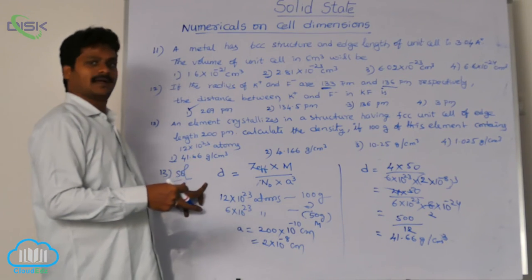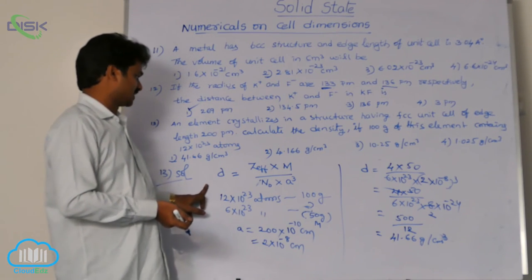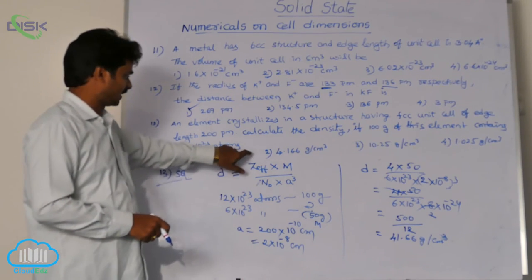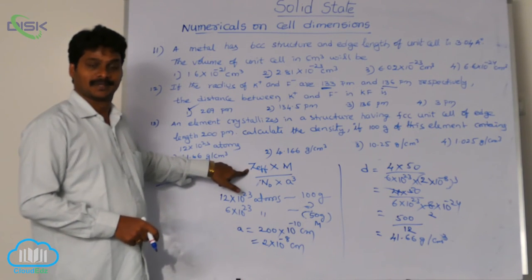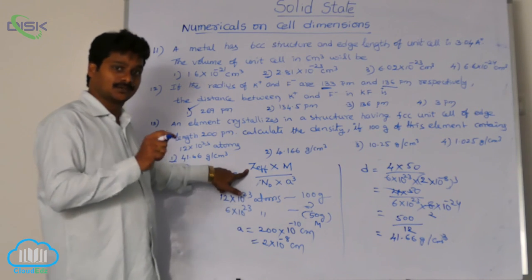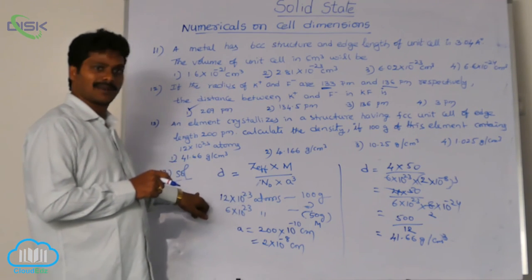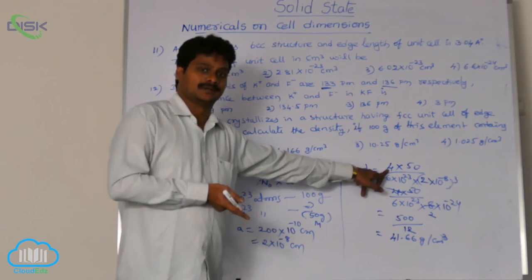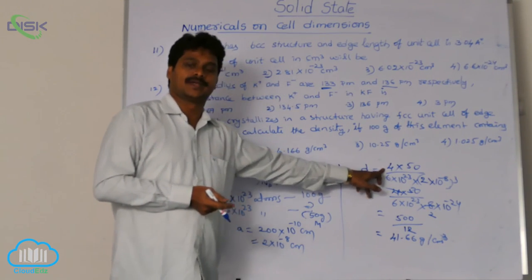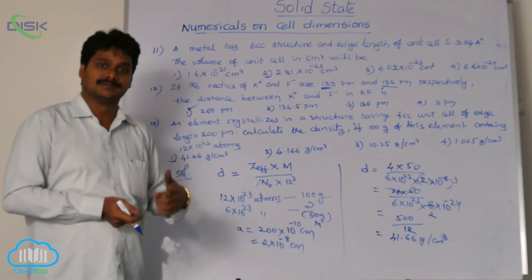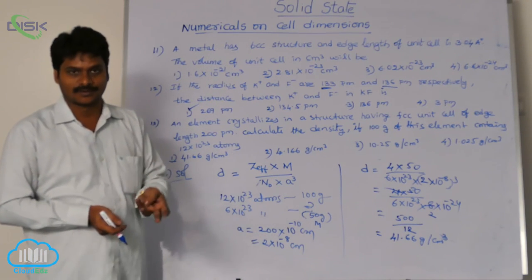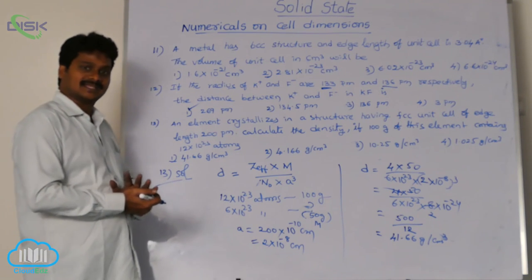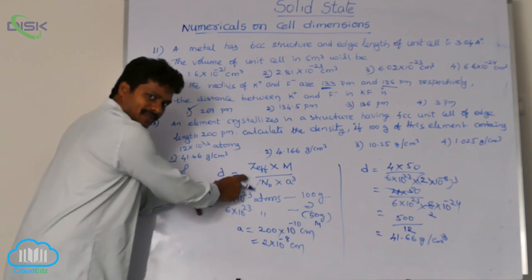If there is a question for FCC we do in this way. If it is BCC here we substitute 2 because effective number of atoms in BCC is 2. Then calculate using the same formula but with 2 here. If asked in simple cube, take 1. Why? Effective number of atoms in BCC 2, FCC 4, simple cube 1. So for any kind of question for density use the same formula in cubic system.